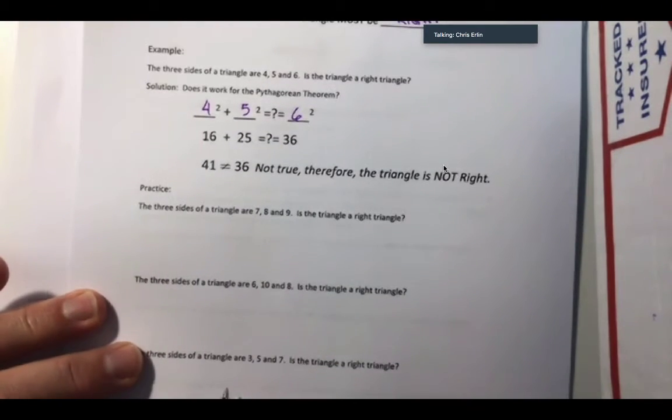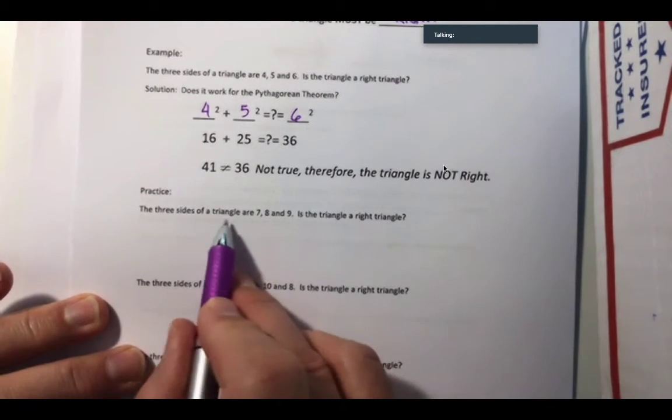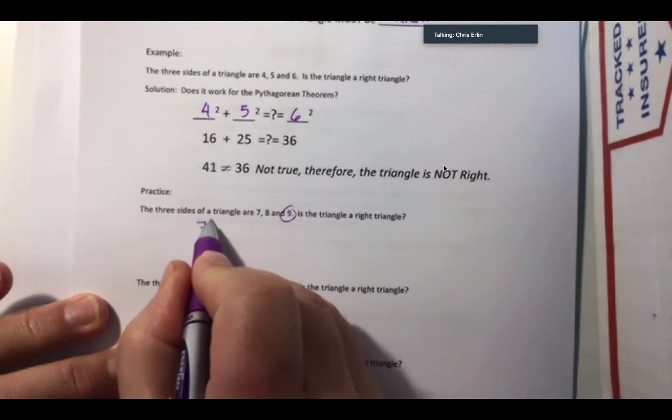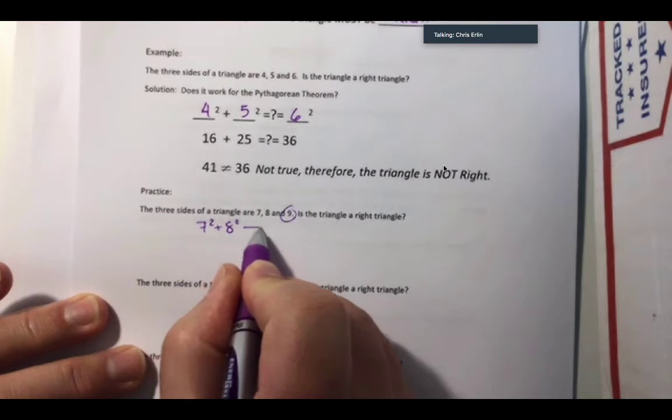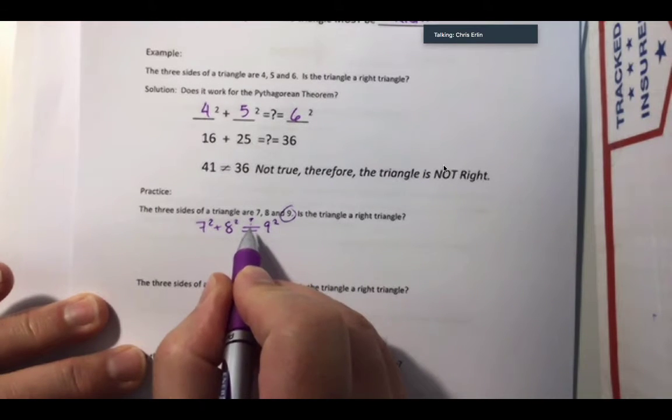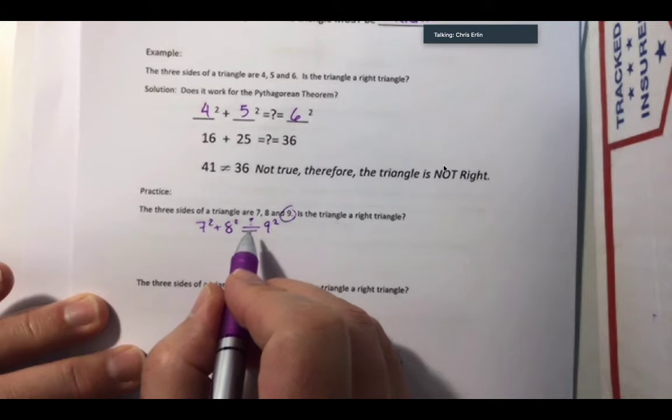We can apply that to these three scenarios as practice. The three sides of a triangle are 7, 8, and 9. Okay, 9 is the biggest one. So I'm going to say 7 squared plus 8 squared may be equal to 9 squared. I put a question mark on top of it. That's not official math notation, but I think it's helpful.